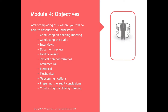An important part is the documentation review of the various categories: telecom, architecture, electrical, cooling and mechanical. We need to do a physical facility review, walking around the site and checking out the various components of the facility and computer rooms. We will also cover some of the typical nonconformities which are found during an audit.